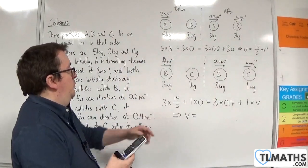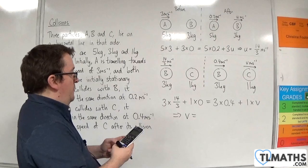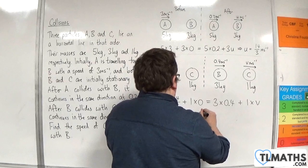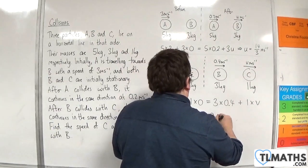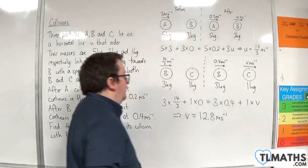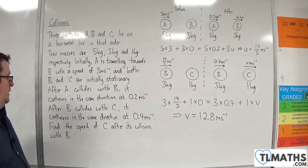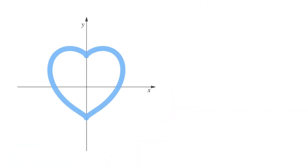That's 14 take away 3 lots of 0.4, which equals 64 over 5, or 12.8 meters per second. That is the speed of C after its collision with B.